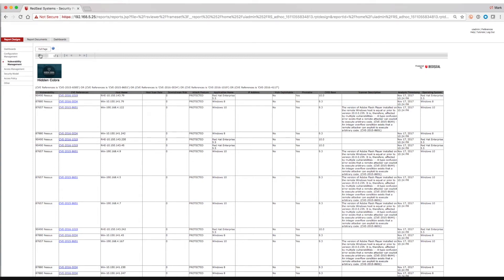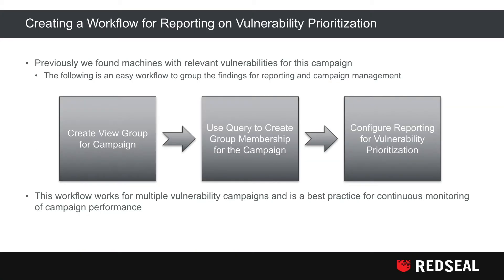You can also schedule this as a daily report. Now I want to show you how to create a workflow for reporting on vulnerability prioritization. When we have identified machines with relevant vulnerabilities for this campaign, there's an easy workflow to group these findings for reporting and campaign management. First, we'll create a view group for the campaign, use RedSeal queries to populate that group, and then configure reporting for vulnerability prioritization. This workflow works for multiple vulnerability campaigns and is a best practice for continuous monitoring.